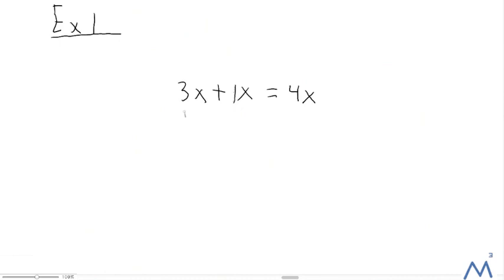So this thing right here is called a constant and the x right here, not including the 1, would be a variable.